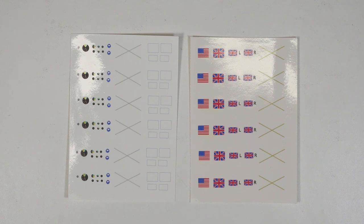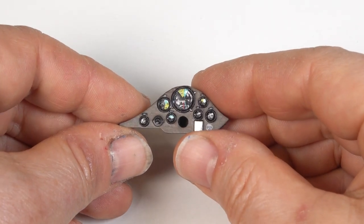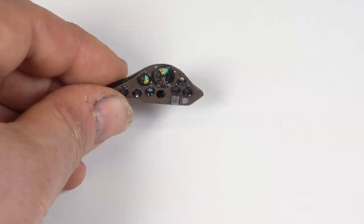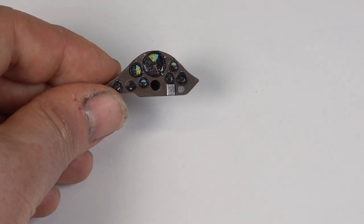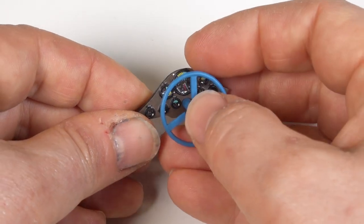The decals for the instruments went on well and were sealed with a layer of micro crystal clear giving a nice gloss finish recreating the glass of the gauges. The 3D printed steering wheel fits neatly into the dashboard. Its boss was painted with a Molotow chrome marker.